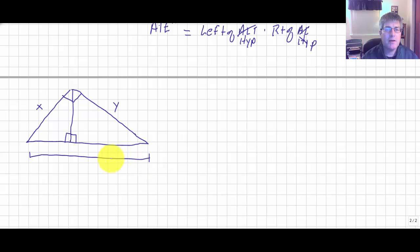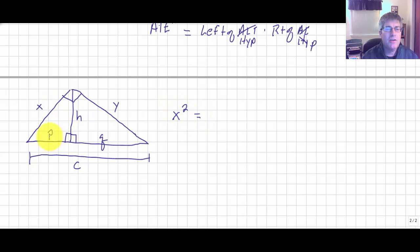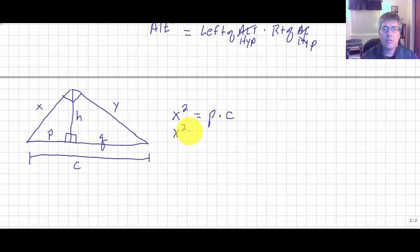The entire hypotenuse is c, the two segments of the hypotenuse created by the altitude are p and q, and the altitude itself is h. Using the altitude on hypotenuse theorems: x squared equals its nearest side p times the entire hypotenuse c, which we can also write as x squared equals p times p plus q.